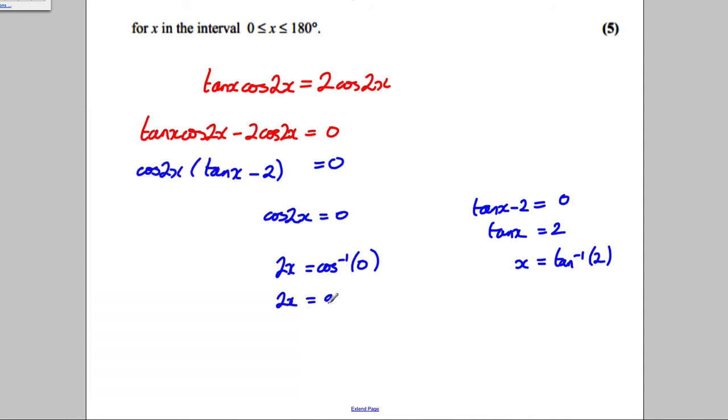And the inverse cos 0 is 90 degrees. So, 2x is equal to 90 degrees. Let's draw our cosine graph. We're going to double the range. We're looking, double the interval.